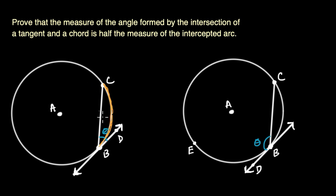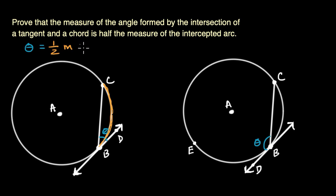In this left scenario, what we want to show is that theta is equal to half the measure of the intercepted arc. So we want to show that theta is equal to half the measure of arc BC. That's what we want to show in this scenario.